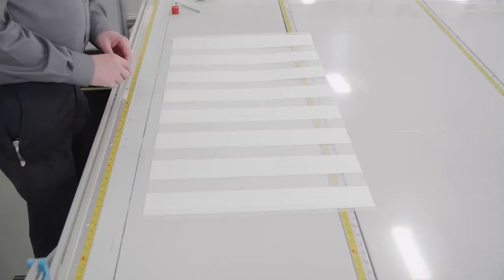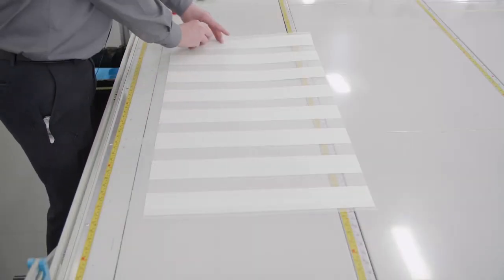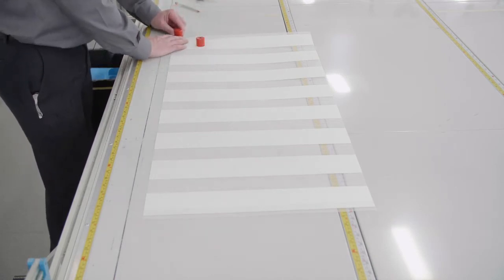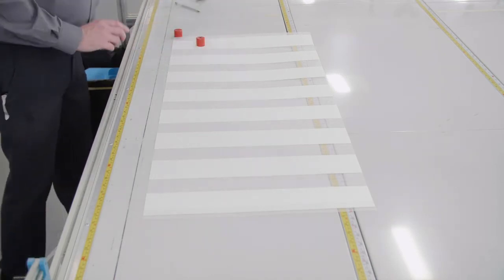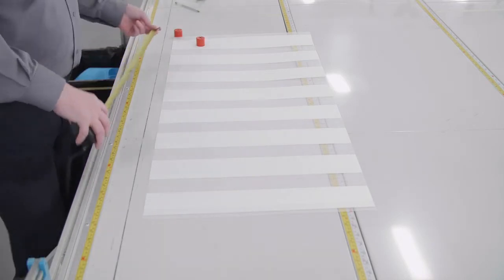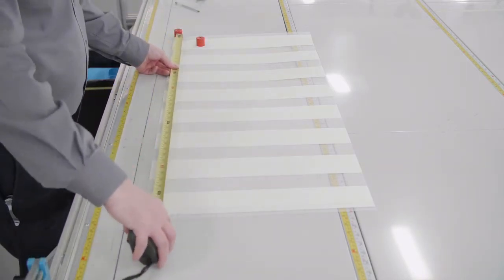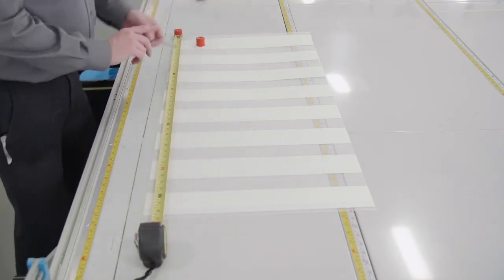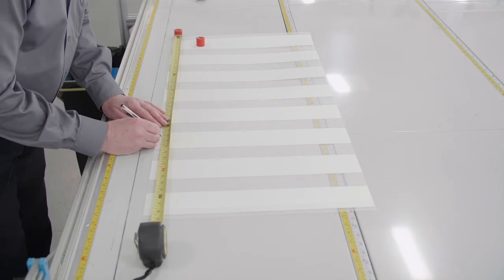Now, with the fabric still folded on the mesh panel and the panels still aligned, we're going to measure the glass size drop from the bottom and mark onto the fabric to the glass size drop.